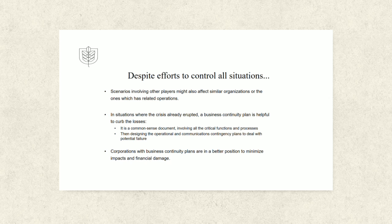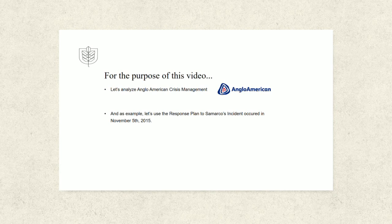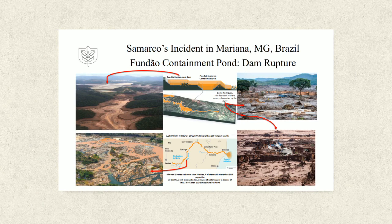Now let's analyze Anglo-American's crisis management systems, using as an example the response plan to the Samarco incident occurring on November 5, 2015. The Samarco incident occurred in Bento Rodrigues, a small sub-district of the city of Mariana in Brazil. The Fundão containment dam suffered a rupture, leaking a wave of 60 million cubic meters of slurry that destroyed the village and polluted the Rio Doce, a 300-mile-length river.